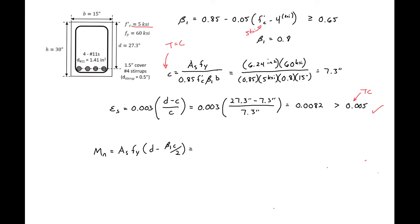We know our steel is yielded and we can use a phi factor of 0.9. Then we can plug into our nominal moment expression, which is our force times our lever arm. AS is 6.24 square inches, FY is 60 KSI, our D, 27.3 inches, and then minus beta 1 point 8 times 7.3 inches, divided by 2. We'll get an MN equal to 9,128 kip inches. We can compare this to our MN required from before. We found our MN required to be 8,400 kip inches. We can see that our MN, the capacity of our actual section, is greater than our MN required. We're okay here as well.